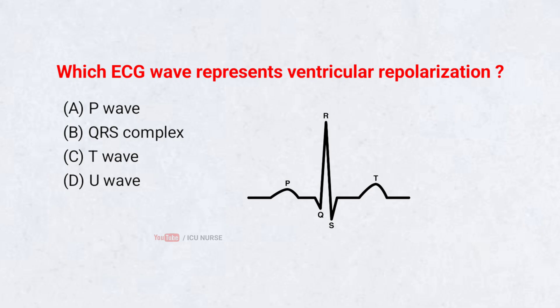Which ECG wave represents ventricular repolarization? A. P-wave, B. QRS complex, C. T-wave, D. U-wave. Drop your answers in the comment section below.